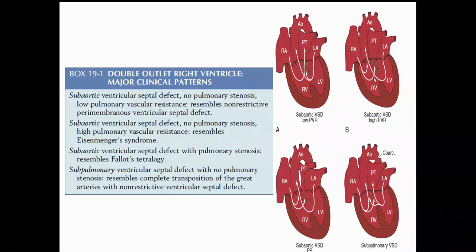The subaortic ventricular septal defect with pulmonary stenosis resembles tetralogy of Fallot, and the subpulmonary VSD with no pulmonary stenosis resembles a TGA type of DORV with non-restrictive ventricular septal defect.